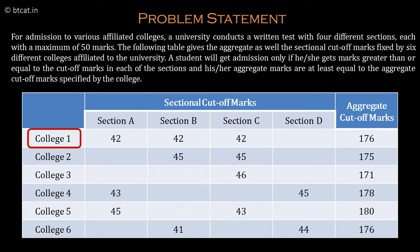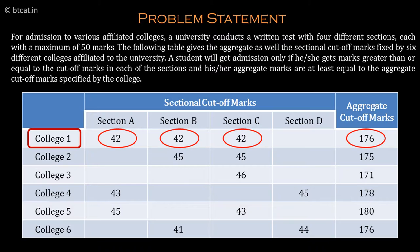College 1 has a sectional cutoff of 42 for section A, 42 for section B, and 42 for section C, whereas there is no sectional cutoff requirement for section D for college 1. There is also an aggregate cutoff of 176 marks. So any student who scores more than 42 in section A, more than 42 in section B, more than 42 in section C, and more than 176 overall is eligible to get a call from college 1. All these marks are out of 50 and the total marks are out of 200.